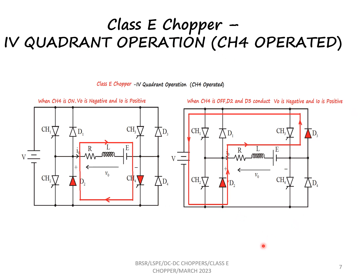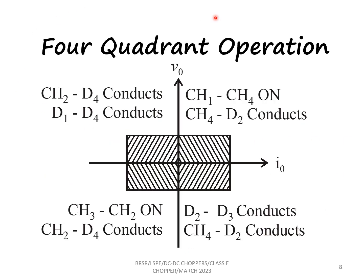In this lecture we have seen the operation of a class E chopper in all four quadrants. This diagram explains which switch is switched on in each quadrant. For first quadrant operation, CH1 and CH4 are on; when CH1 is switched off, CH4 and D2 conduct. For second quadrant operation, CH2 and D4 are on; when CH2 is switched off, D1 and D4 conduct. For third quadrant operation, CH3 and CH2 are kept on; when CH3 is switched off, CH2 and D4 conduct. For fourth quadrant operation, CH4 is operated; when CH4 and D4 conduct, voltage is negative and current is positive, and D2 and D3 conduct.